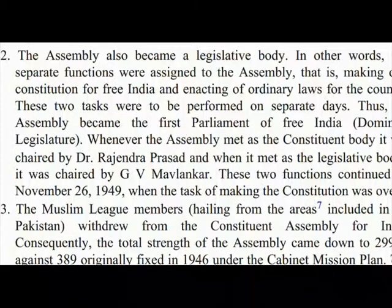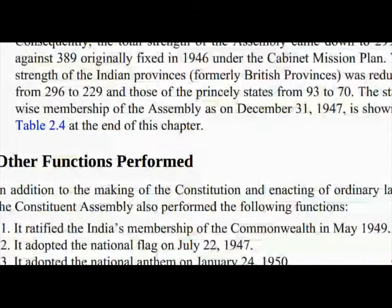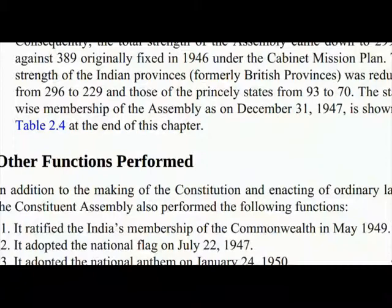The Muslim League members from the areas included in Pakistan withdrew from the Constituent Assembly for India. Consequently, the total strength of the assembly came down to 299, as against 389 originally fixed in 1946 under the Cabinet Mission Plan. The strength of the Indian provinces was reduced from 296 to 229, and those of the princely states from 93 to 70.